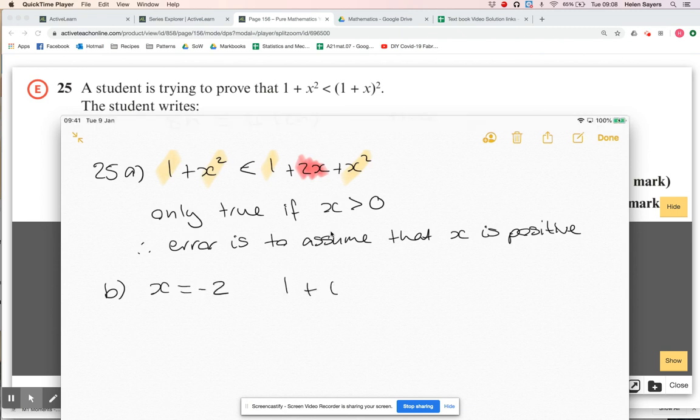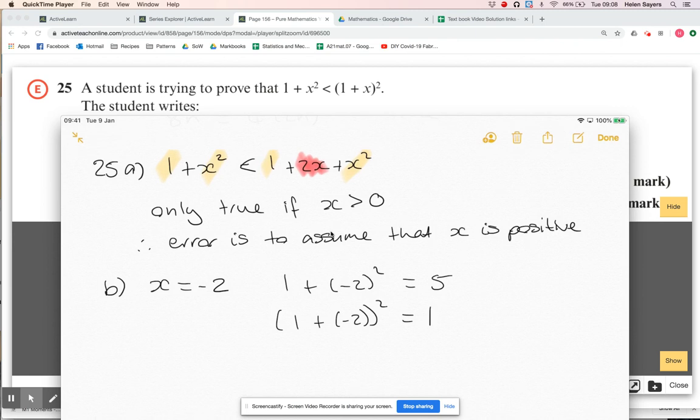One plus minus two squared is one plus four, which is five. Then one plus minus two and then squaring - that would be one plus minus two equals minus one, so minus one all squared is one. Let's write this out more clearly.